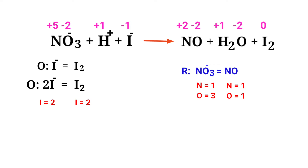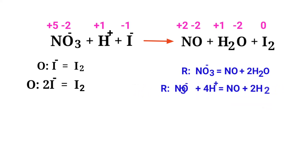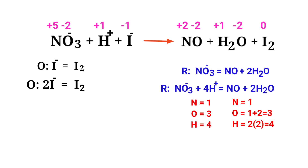Now balance the number of atoms in the reduction half reaction. To balance the oxygen atoms, you can produce water molecules. Now the number of atoms are balanced in the reduction half reaction.